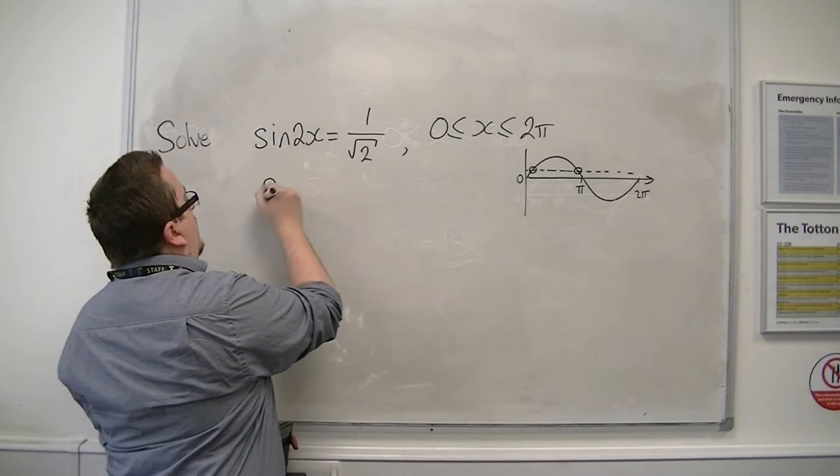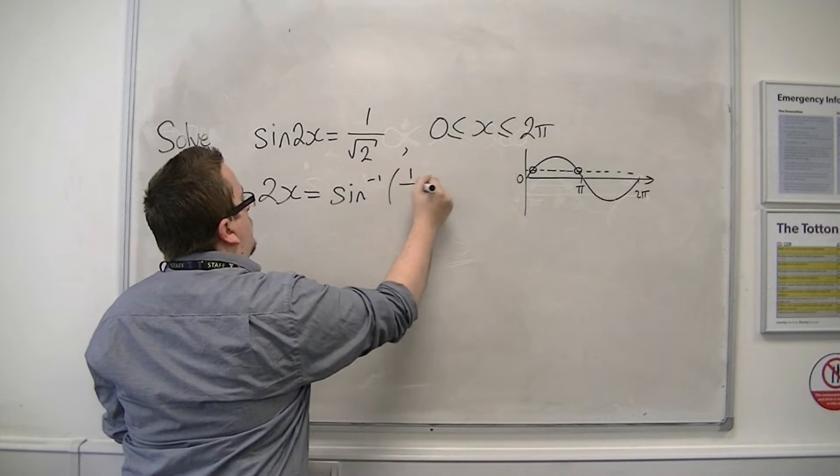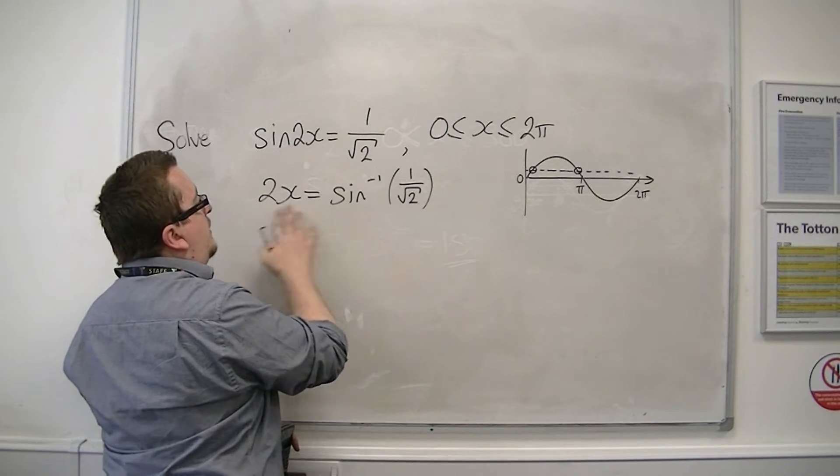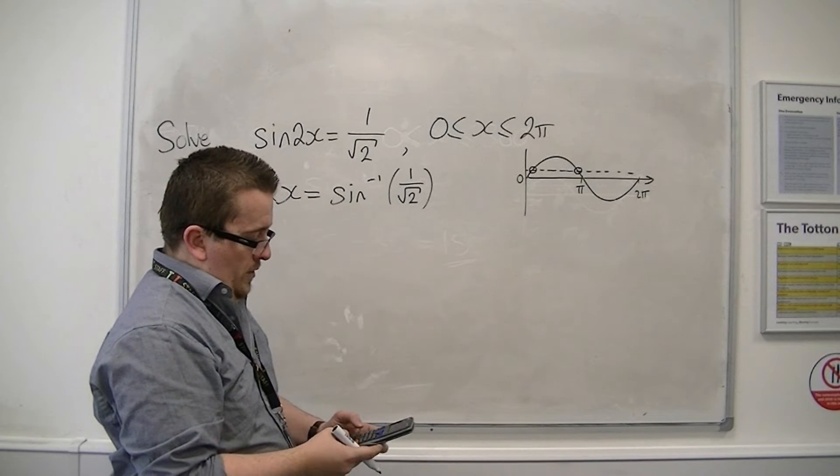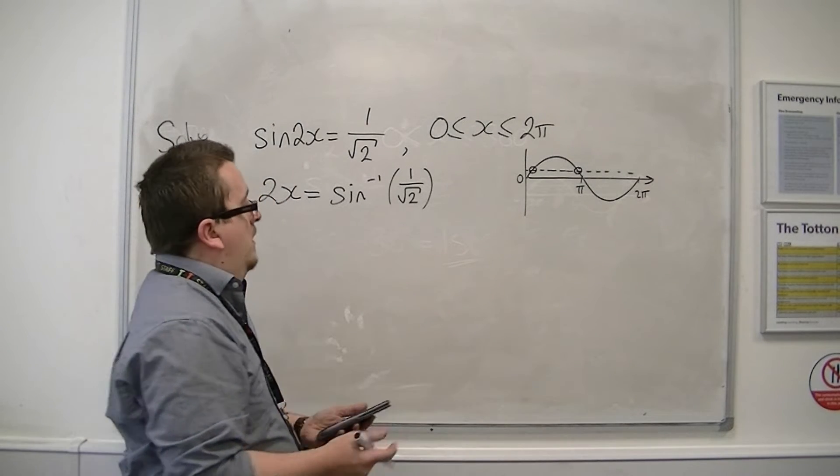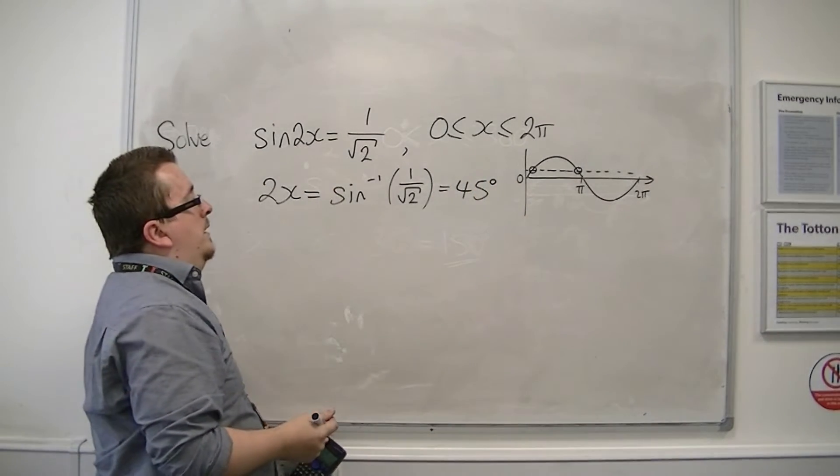So the first thing we do is inverse sin 1 over root 2. So that means that 2x is going to be equal to inverse sin 1 over root 2. So 1 over root 2, and that's going to give you 45 degrees.